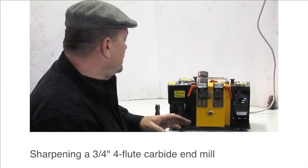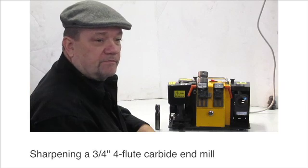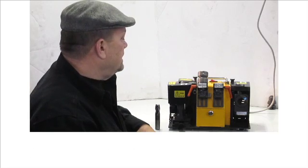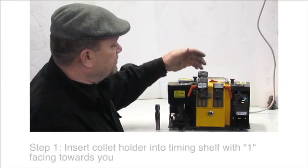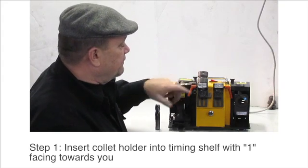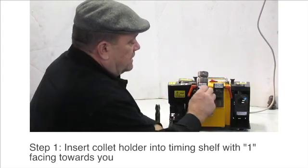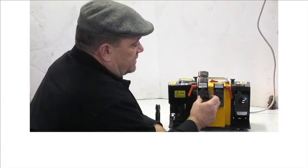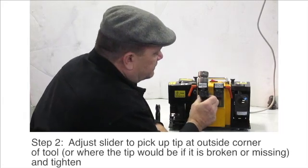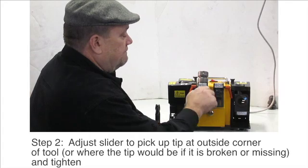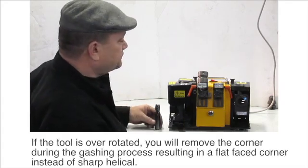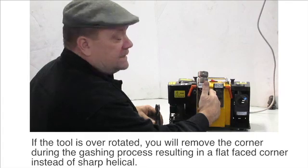So quickly here we'll do a demo to sharpen a four flute carbide end mill. What happens in this process is you put the tool in with number one facing you. This is an adjustable slider depending on the width of your tool. We're going up to three quarters so we'll put it up towards the top, tighten that up so it doesn't move, put tooth number one on this side.